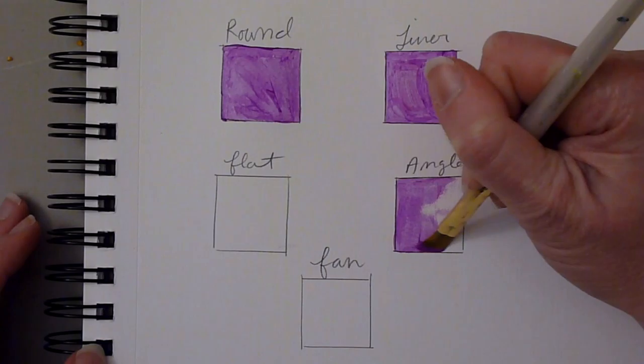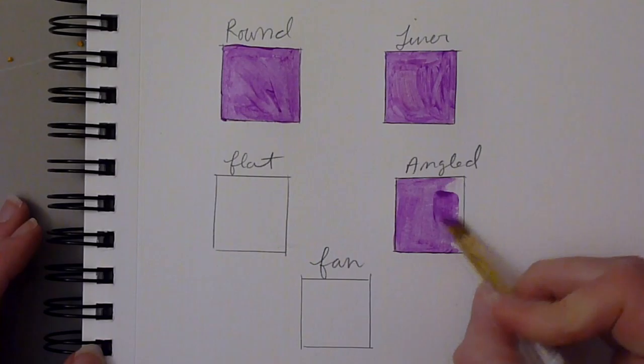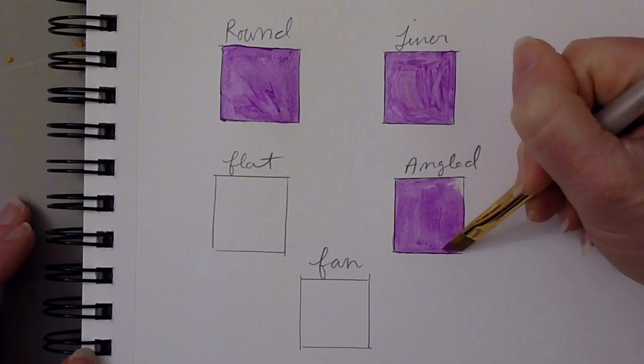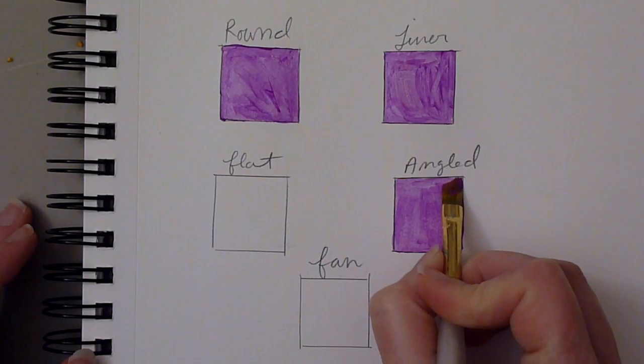An angled brush is similar to a flat brush, which we will look at next. The difference between an angled and a flat is at the very end of the brush, an angled brush's bristles are cut into an angle, hence the name. It leaves you with one side with sort of a sharp point. It can make some different lines than a flat.